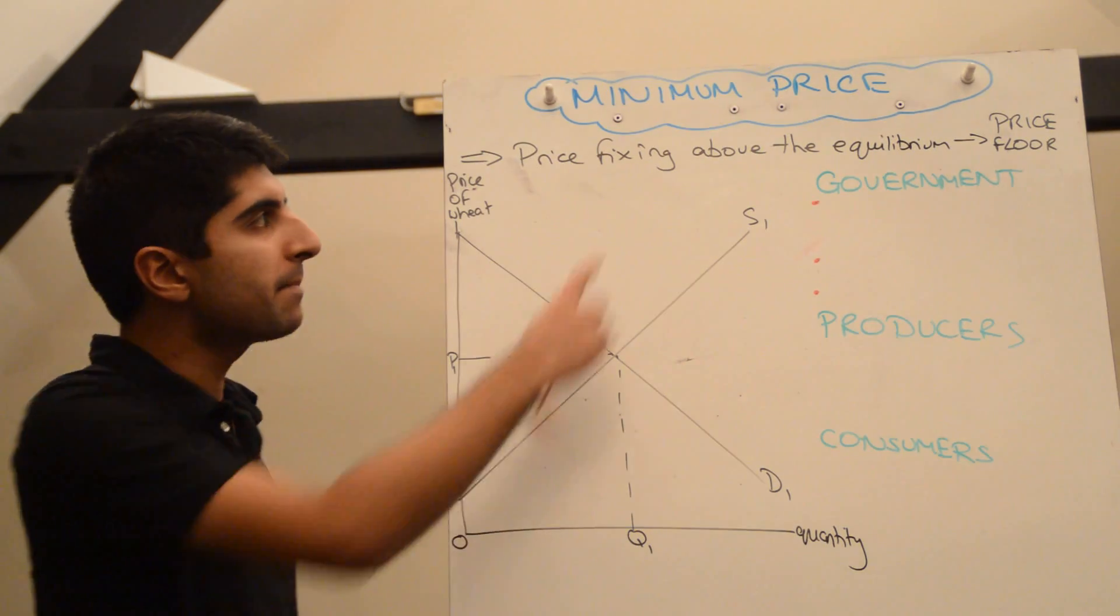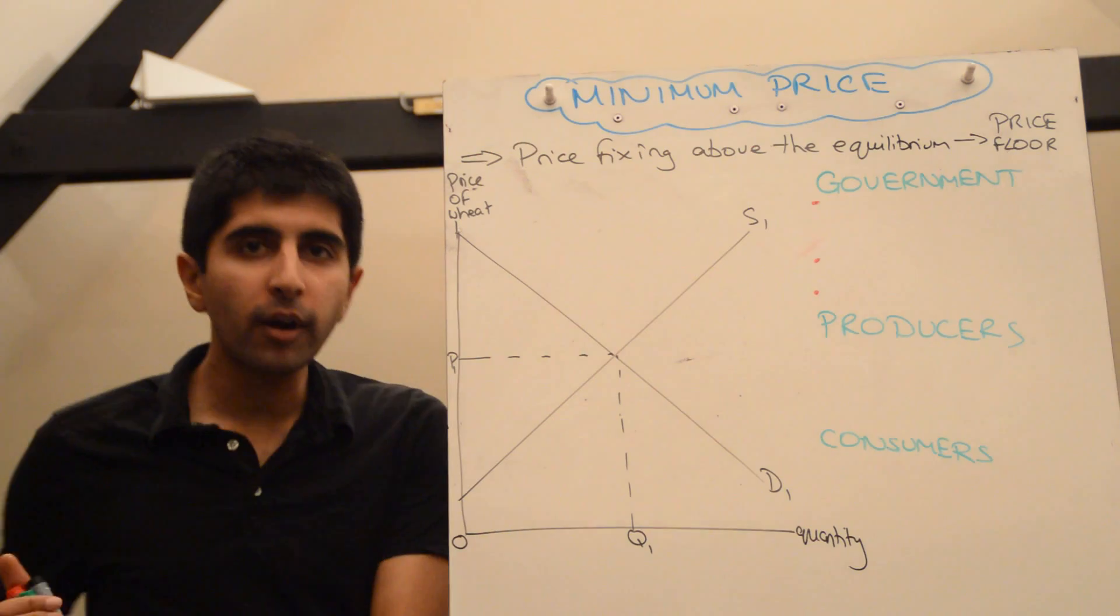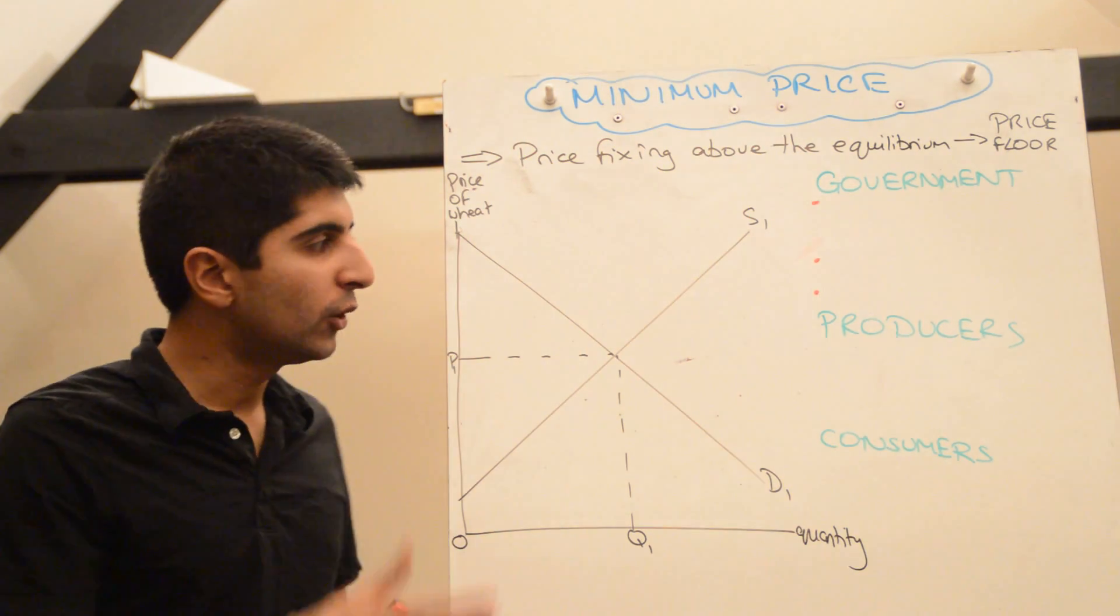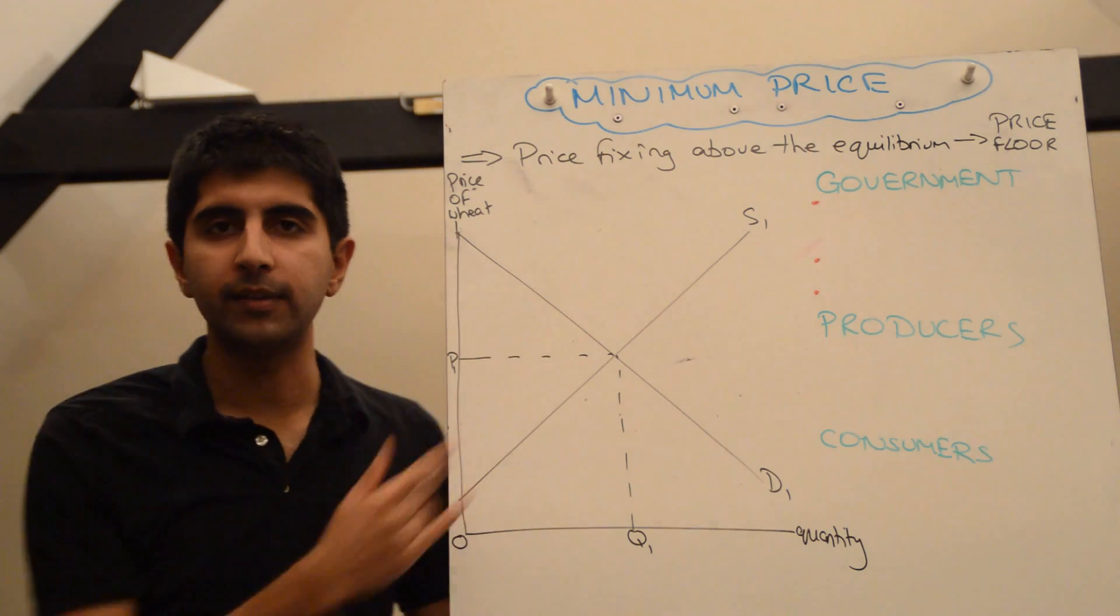Let's, in this video, analyze the impact a minimum price can have on a market. A minimum price is a price control set by the government, normally above the equilibrium price in the market.